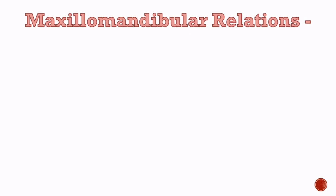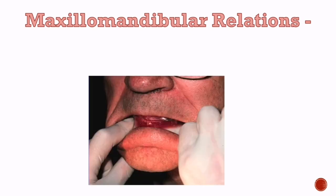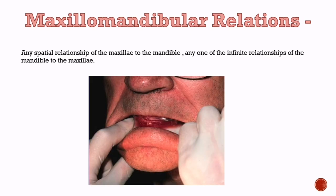Jaw relation, which is also known as maxillomandibular relations, is defined as any spatial relationship of the maxilla to the mandible, or any one of the infinite relationships of the mandible to the maxilla. By spatial relationship we mean in a given space or dimension.